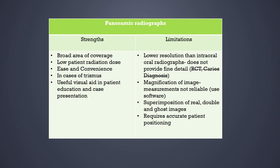There is magnification of the image and measurements are not reliable — software must be used for exact measurements, with approximately 1 to 1.8 times magnification on screen. There is also superimposition of real, double, and ghost images, which can be difficult to delineate unless the image is studied thoroughly. Accurate patient positioning is required, as common errors occur if the patient is not carefully positioned within the focal trough.